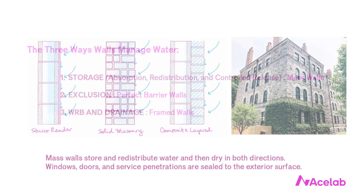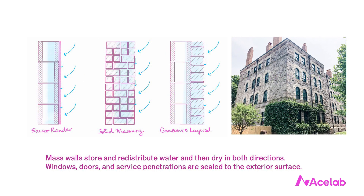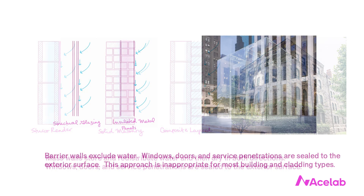The storage approach is how mass walls manage water. It involves the wall absorbing water, redistributing it, and then releasing it by drying. These walls work because they're made out of non-moisture-sensitive materials that have a tremendous capacity to safely store water — we let them get wet and then we let them dry.